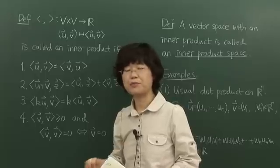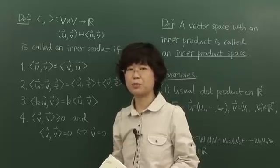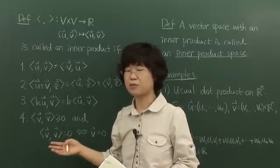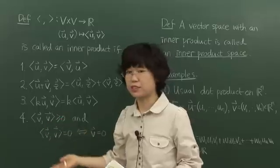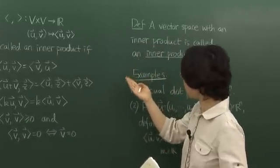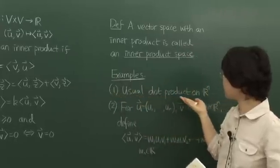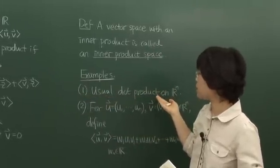Therefore, dot products on Euclidean n-space are examples of inner product. So that's our first example. The usual dot product on R^n forms an inner product.